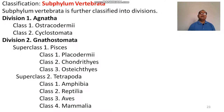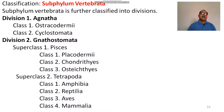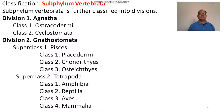Phylum Vertebrata may be divided into Agnatha and Gnathostomata. Agnatha includes two classes: Ostracodermi and Cyclostomata. Division Gnathostomata has two superclasses: Superclass Pisces and Superclass Tetrapoda. Superclass Pisces is further divided into three classes — Placodermi, Chondrichthyes, and Osteichthyes — and Tetrapoda is divided into four classes: Amphibia, Reptilia, Aves, and Mammalia.